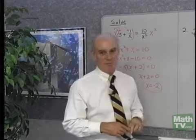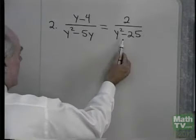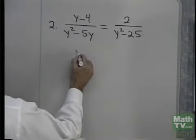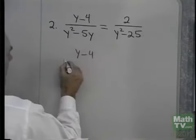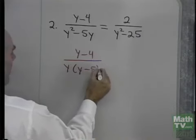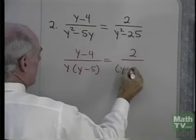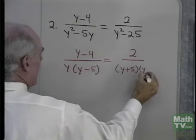Let's look at our next problem. Here I want to do the same type of thing, but before I see what the least common denominator is, I'm going to have to factor these denominators. So y minus 4 divided by y times y minus 5, and here I have 2 over y plus 5 y minus 5.